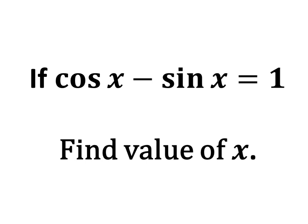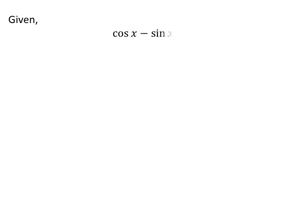In this video, we will learn to find the value of x when cosine of x minus sine of x is equal to 1. Given to us: cosine of x minus sine of x is equal to 1.